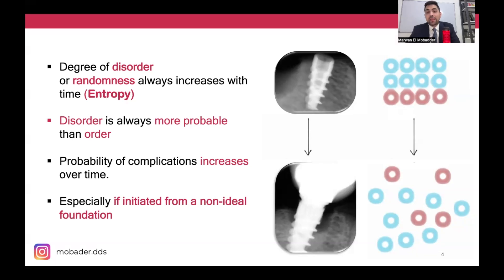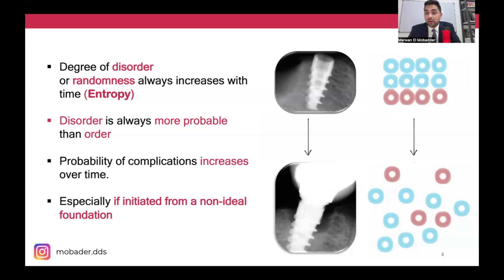This is exactly true if we take the example of dental implants. A dental implant placed in the bone and surrounded by soft tissue is a closed system — disorder tends to increase. Peri-implant mucositis, mechanical disorders, complications, and peri-implantitis tend to increase with time, especially if initiated from a non-ideal foundation.